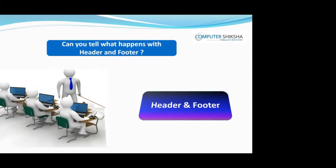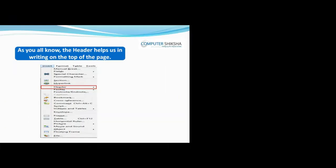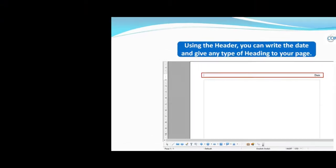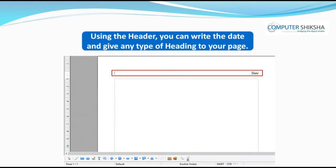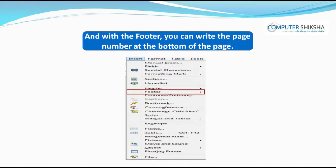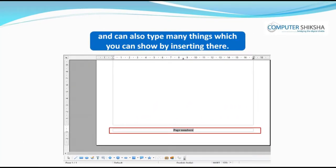Can you tell what happens with header and footer? The header helps us in writing on the top of the page. Using the header, you can write the date and give any type of heading to your page. And with the footer, you can write the page number at the bottom of the page and can also type many things which you can show by inserting there.